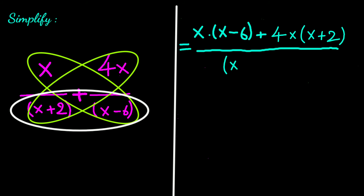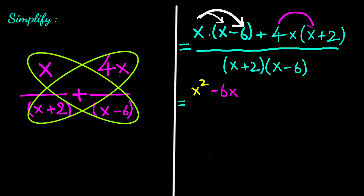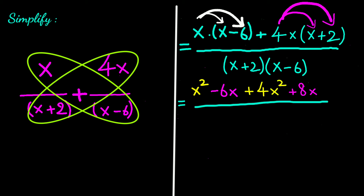We have (x plus 2) times (x minus 6) as the denominator. Multiplying x with x gives x squared, x with negative 6 gives negative 6x. Then 4x with x gives 4x squared, and 4x with 2 gives 8x, all divided by (x plus 2)(x minus 6).